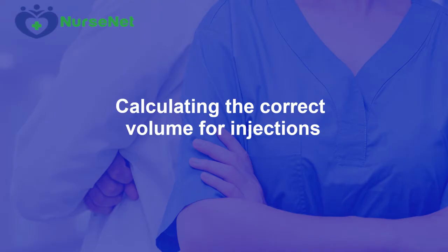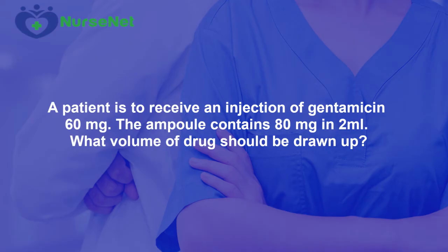So let's look at a typical drugs calculation test question. A patient is to receive an injection of gentamicin, 60 mg. The ampoule contains 80 mg in 2 ml. What volume of drug should be drawn up?